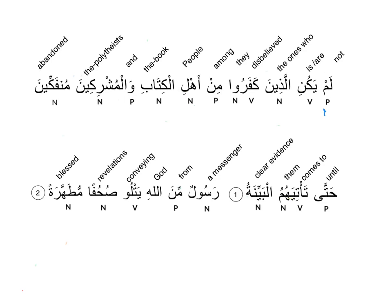One way to help you easily understand the grammar of this verse is to see the meanings first. The meaning would be: 'the ones who disbelieve among the people of the book and the mushrikin were not abandoned until clear evidence comes to them.' So let's analyze this grammatically. Lam would be a particle of negation, and yakun would be the verb — so this particle of negation governs the verb.